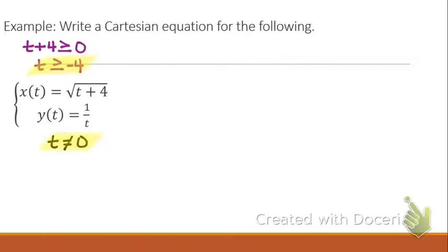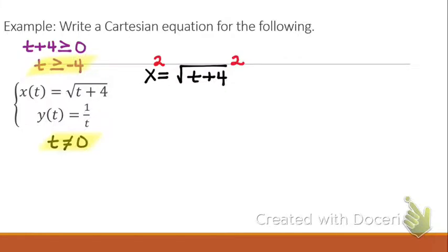Now let's go ahead and get started. It's up to us whether we want to take the x function or the y function to solve for T. I'm going to do the x function for this one. On your test — which is around May 5th — you can decide which one you want to solve and substitute, and you will get the same answer. So if x equals the square root of T plus 4, let's solve that for T. My first step is to square both sides to eliminate the square root, giving x squared equals T plus 4. Then subtract 4 from both sides, giving x squared minus 4 equals T.